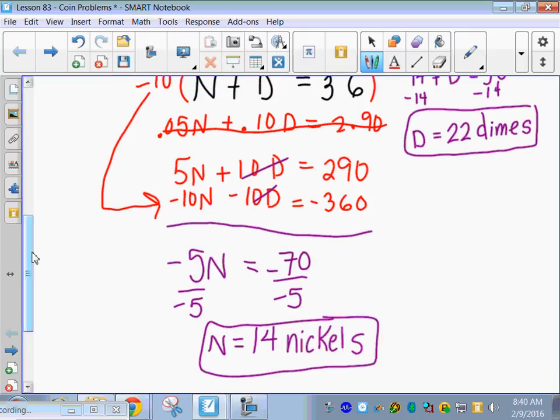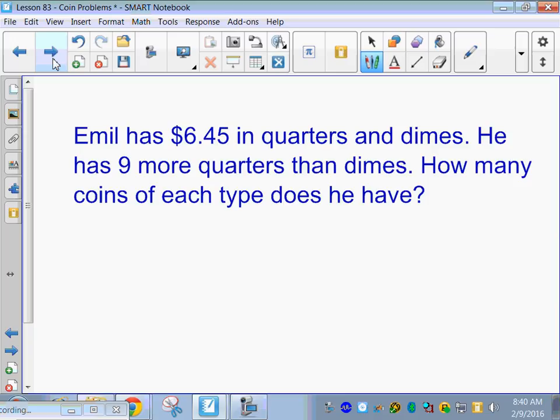Should we get a negative number on any of these answers? No. Okay. We don't want negative money. That would be unfortunate. Alright, so let's try another one. Emil has 6.45 in quarters and dimes. He has 9 more quarters than dimes. How many coins of each type does he have? So, this time we have quarters and we have dimes.